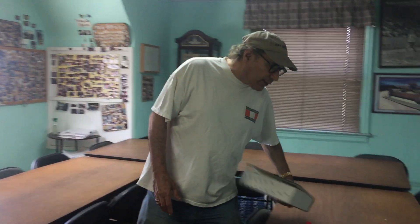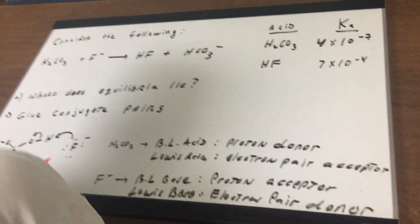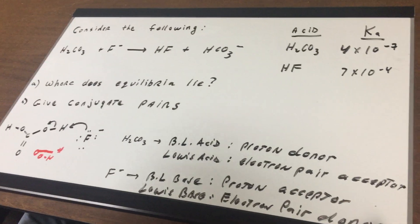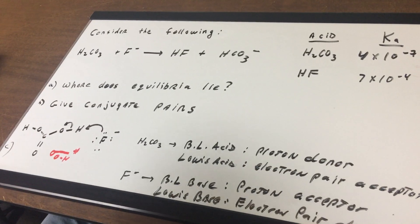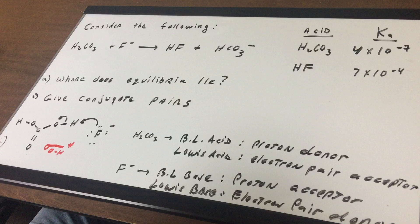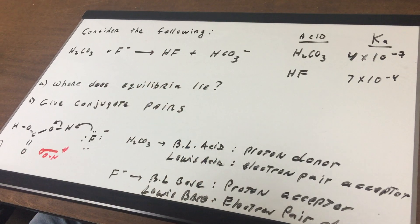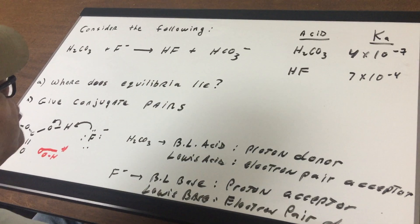I want to do a nice problem with you for the DAT exam on acid-base theory. So come along and let's have a look. This is going to be a three-part question. I give you a reaction involving carbonic acid, and I react it with fluoride ions and we get HF and bicarbonate ion produced.